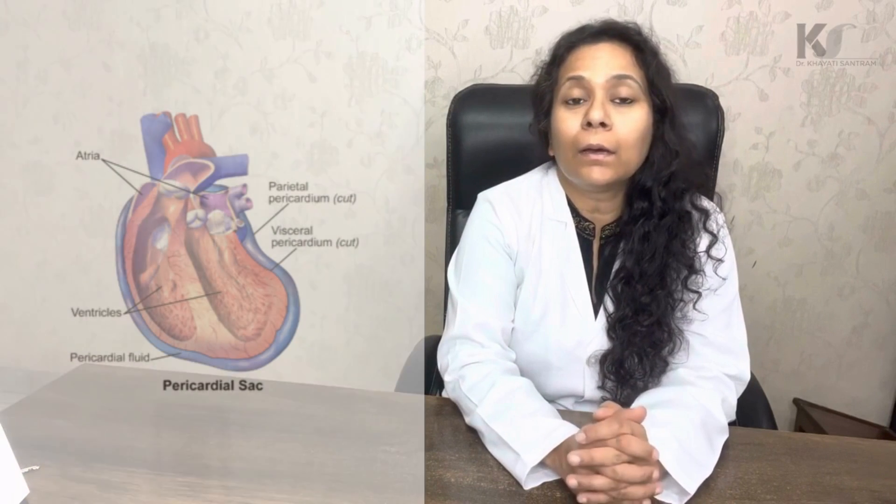These are the two heart sounds which you auscultate with a stethoscope. Now, looking at the histology of the heart, it has three layers: the endocardium, which is the inner layer; the myocardium, which is made up of cardiac muscle fibers; and the epicardium, which is the outer layer. The heart is also covered by a serous covering known as the pericardium, which is further divided into visceral and parietal pericardium. The visceral pericardium is totally adherent to the heart.